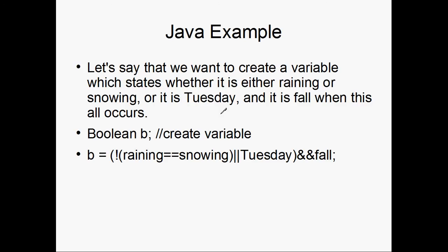So here, we're going to do something in Java to kind of create an application here, or apply it to a Java program. Let's say we want to create a variable which states whether it is either raining or snowing, or it is Tuesday, and it is fall when all this occurs. Let's derive a reason through that, and pause it and don't look at the next two lines, but just try to reason through it yourself. But I'm going to walk through it now.